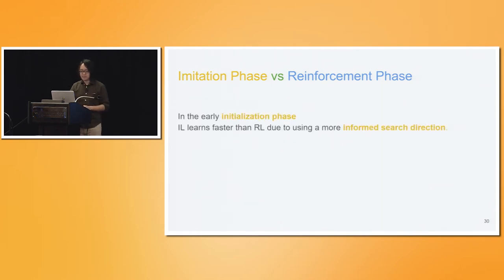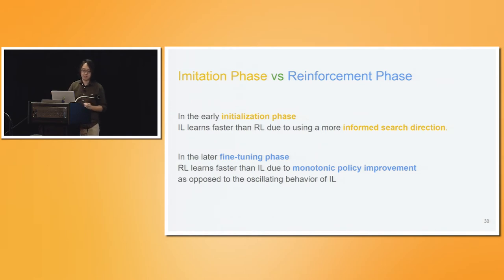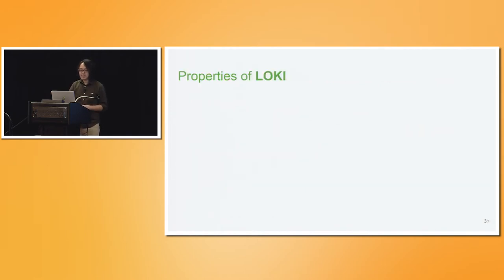Comparing these two approaches: in the early initialization phase of policy learning, imitation learning usually converges faster than RL because it uses a more informed search direction and takes a more aggressive step. But in the later fine-tuning phase, RL usually performs more stably than imitation learning, because imitation learning exhibits this oscillating behavior in general.